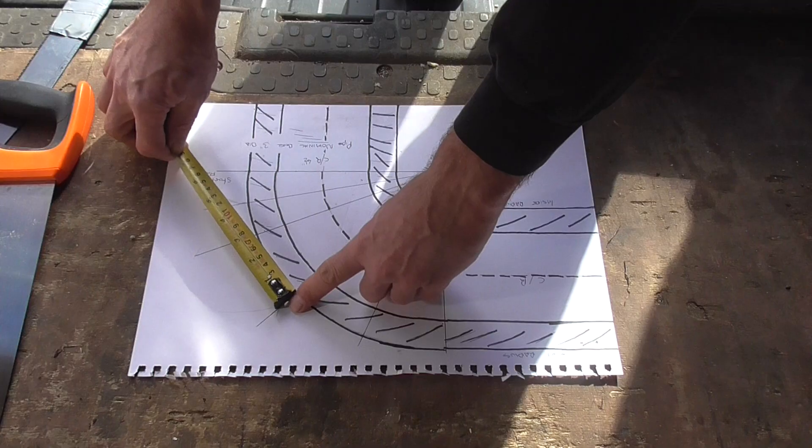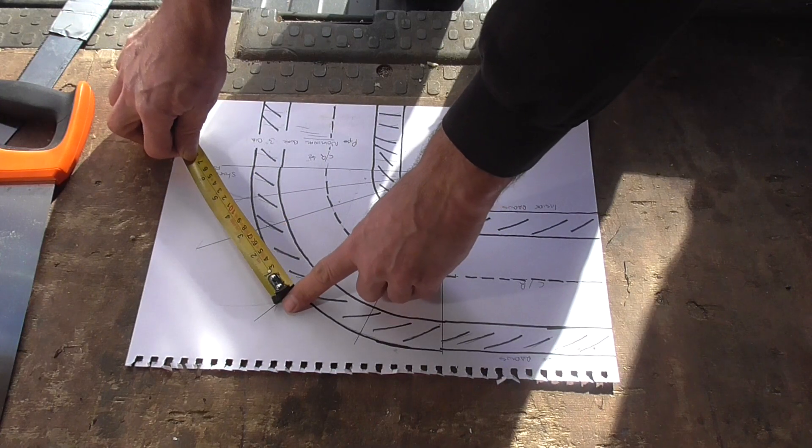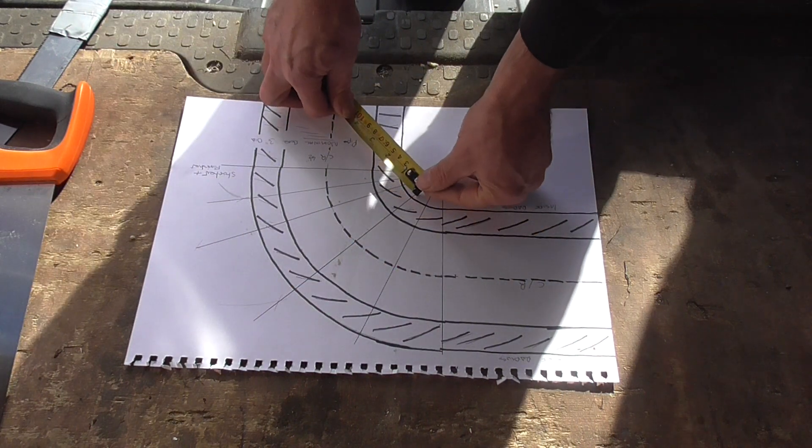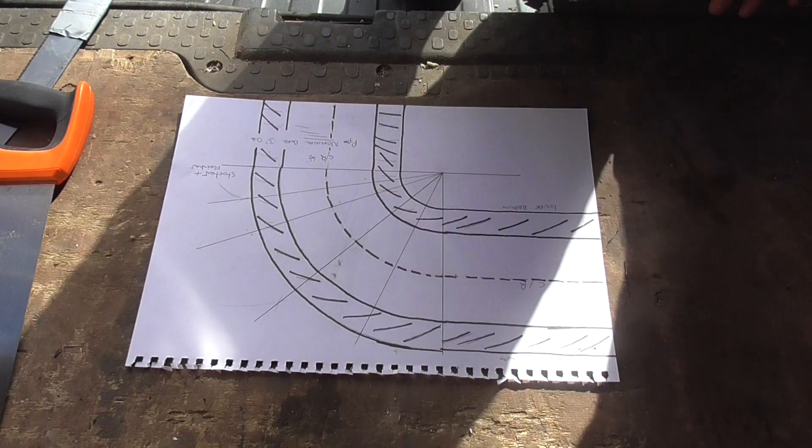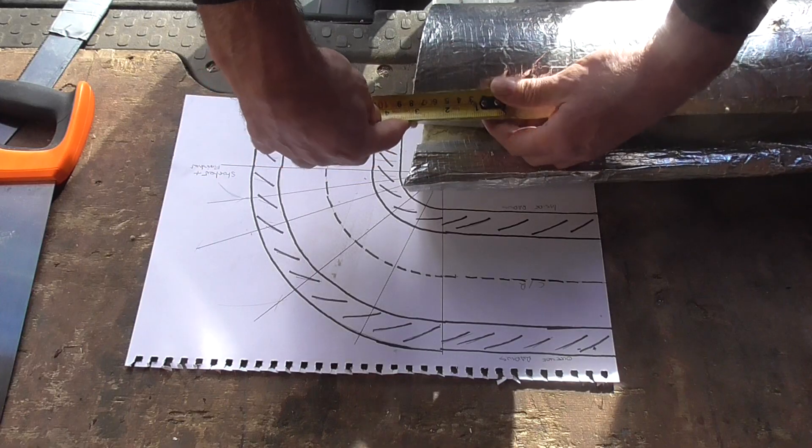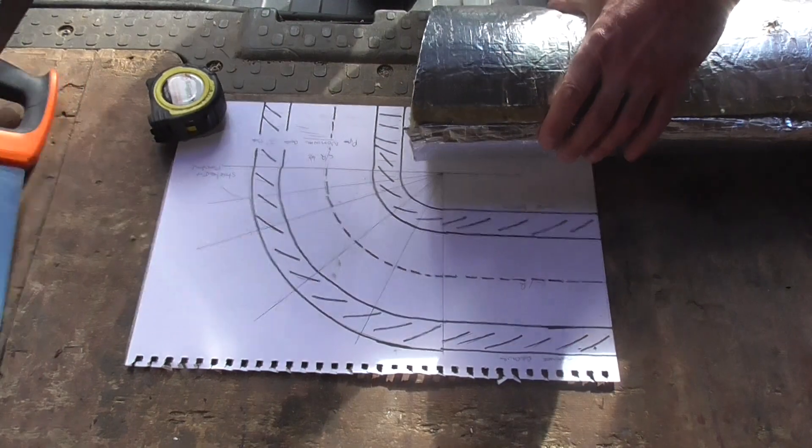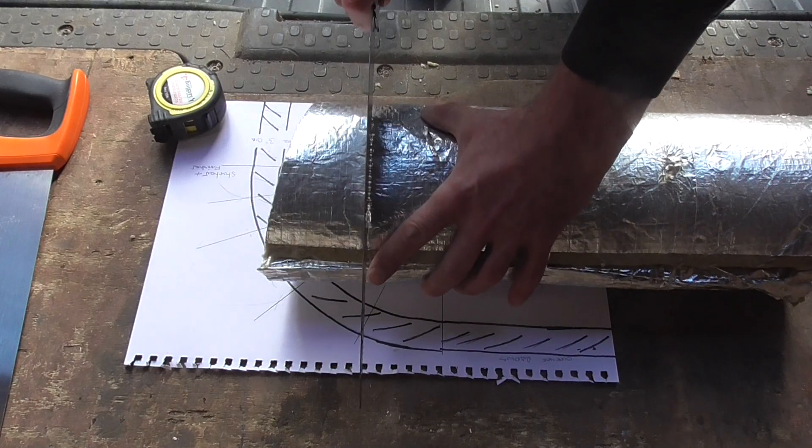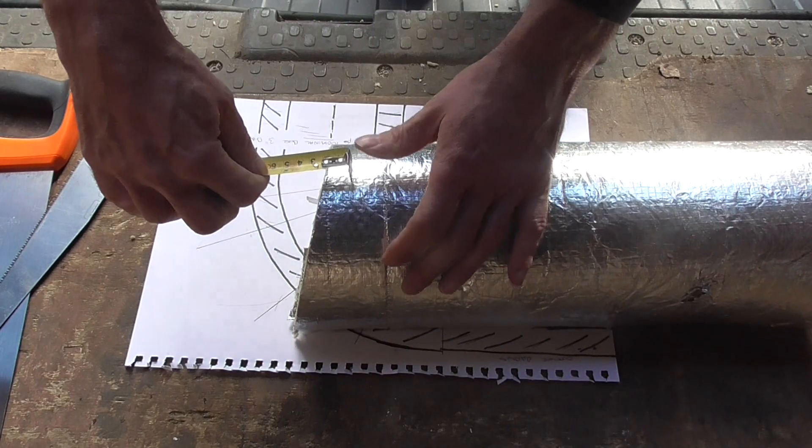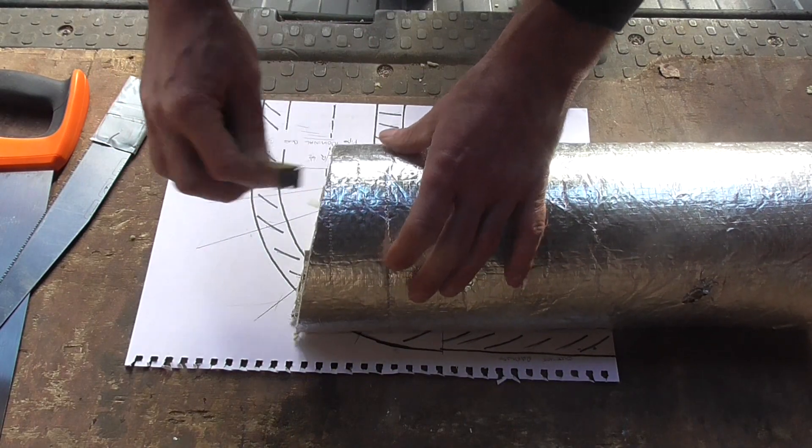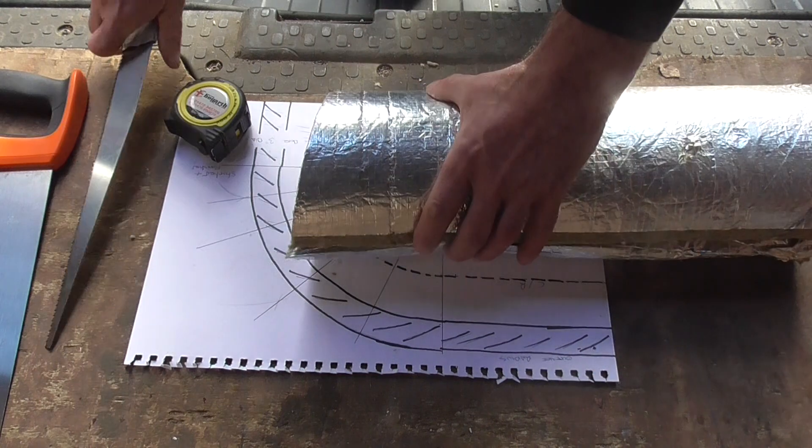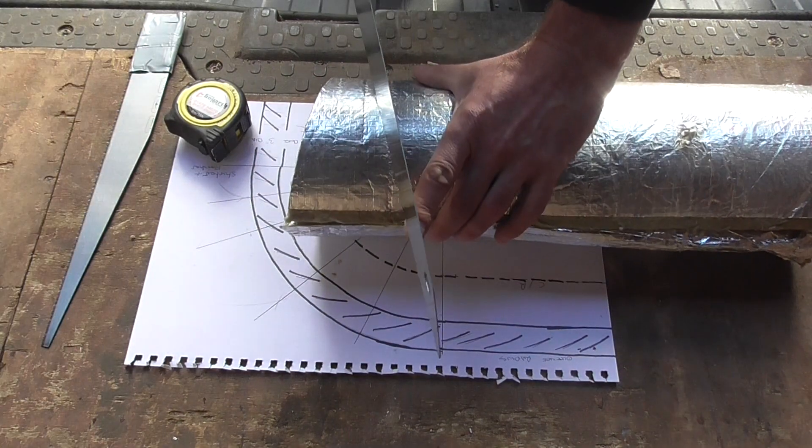So you'd measure across the back there. So you can see there just across the back which is three inches and across the throat which is 18mm. So on the back mark in three inches. And just mark across like this. And in the throat mark in 18mm. And again just put in a scratch line like that. And then just cut between the two lines.